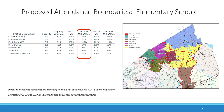The draft one proposed attendance boundaries for elementary schools are shown in slide 12. The range of utilization for the proposed boundaries has decreased to 33 points, with a high of 108 percent at East Clayton to 75 percent at Selma. There is a detailed street level map available in a few slides.